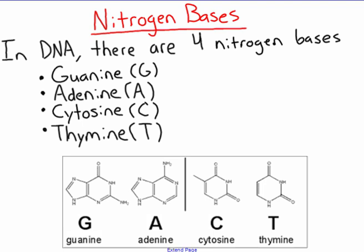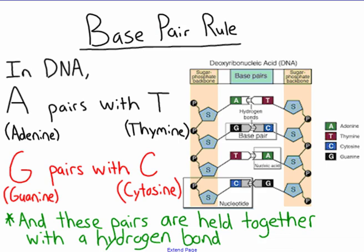A unique thing about these nitrogen bases is that they pair together. When we see a strand of DNA, we always see two pairs: A is always going to pair with T — adenine always pairs with thymine. And G is always going to pair with C. So A and T are always together, and G and C are always together.